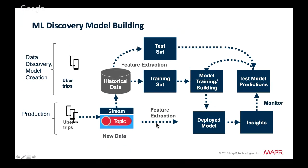There are typically two phases in machine learning with real-time data. The first phase involves analysis on historical data to build the machine learning model. The second phase uses the model in production on live events. We'll first build the model with historic data, save it, and then use the deployed model on live events.